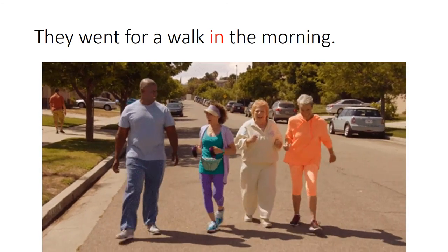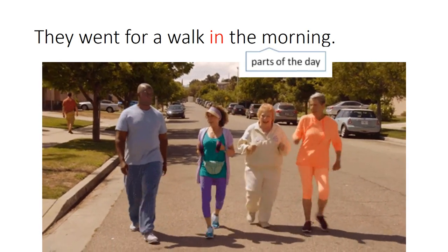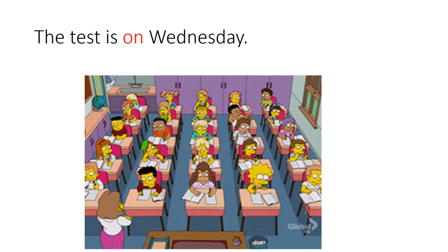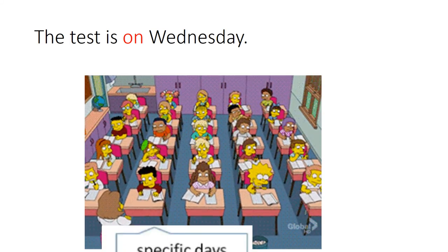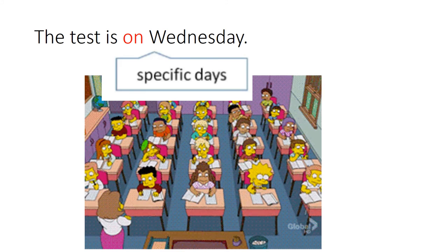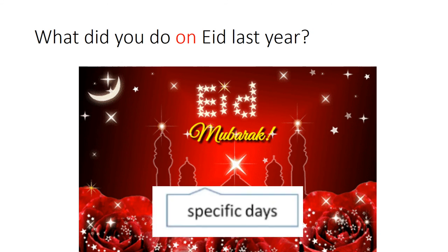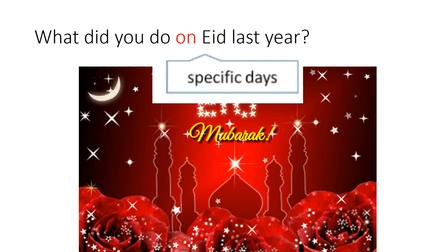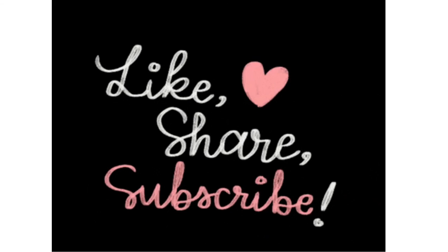They went for a walk in the morning — सुबह के वक्त वो जाते हैं, तो हमने in का इस्तमाल किया। The test is on Wednesday — खास हफ्ते का दिन है, तो specific days के लिए on इस्तमाल किया। What did you do on Eid last year? — ये भी specific day है, तो on इस्तमाल किया। उम्मीद है आपको preposition of time की समझ आई होगी। इस चैनल को subscribe करें, वीडियो को like और share करें।